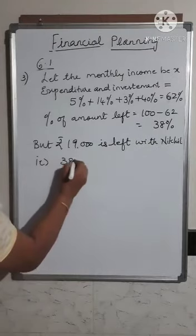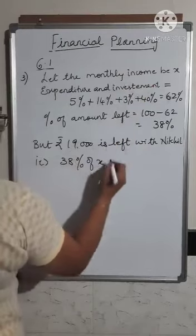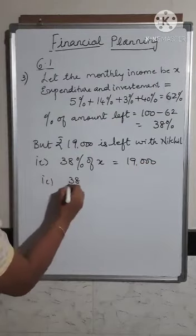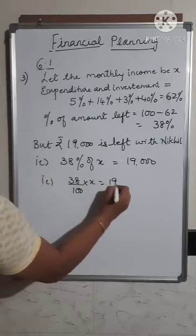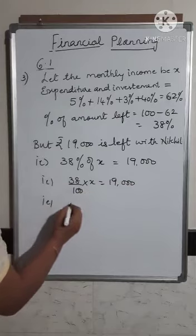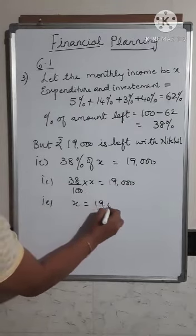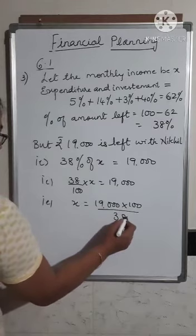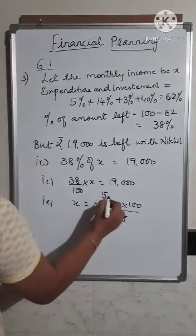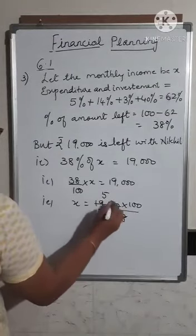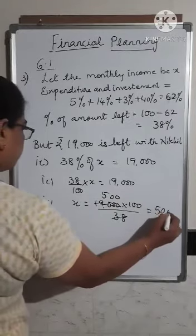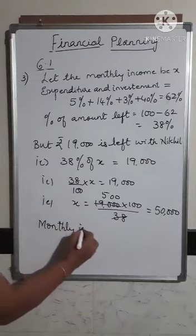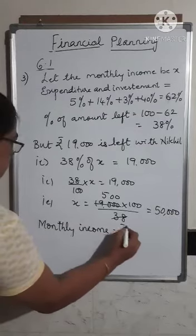The percentage of amount left with him is 38%. So 38% of his monthly income is equal to 19,000. This gives 38 upon 100 into X equals 19,000. Cross multiplying, the value of X equals 19,000 into 100 upon 38, which simplifies to 50,000.